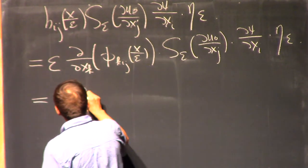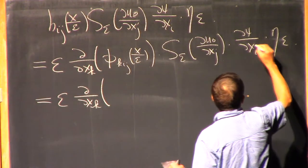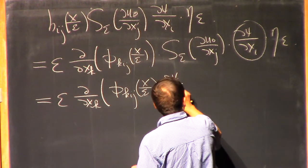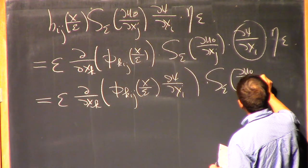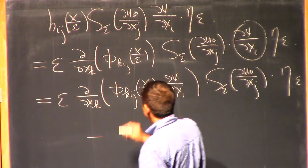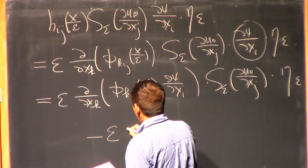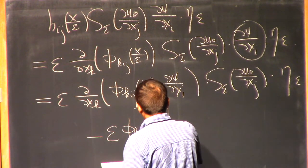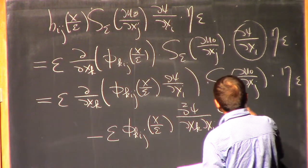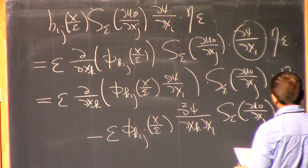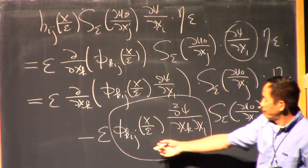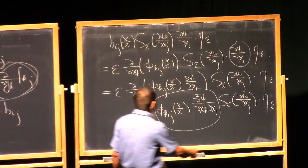Next, you use the product rule — you want to throw this into the derivative: K_ij of x over epsilon times d phi/dxi times S_ε du0/dxj. Of course, the product rule generates another term of the form epsilon times phi times K_ij of x over epsilon times the second derivative d²psi/dxk dxi times du0/dxj times eta_ε. And because of skew symmetry, if you interchange i and j, it's the same thing but with a minus sign, so this last term is actually zero.